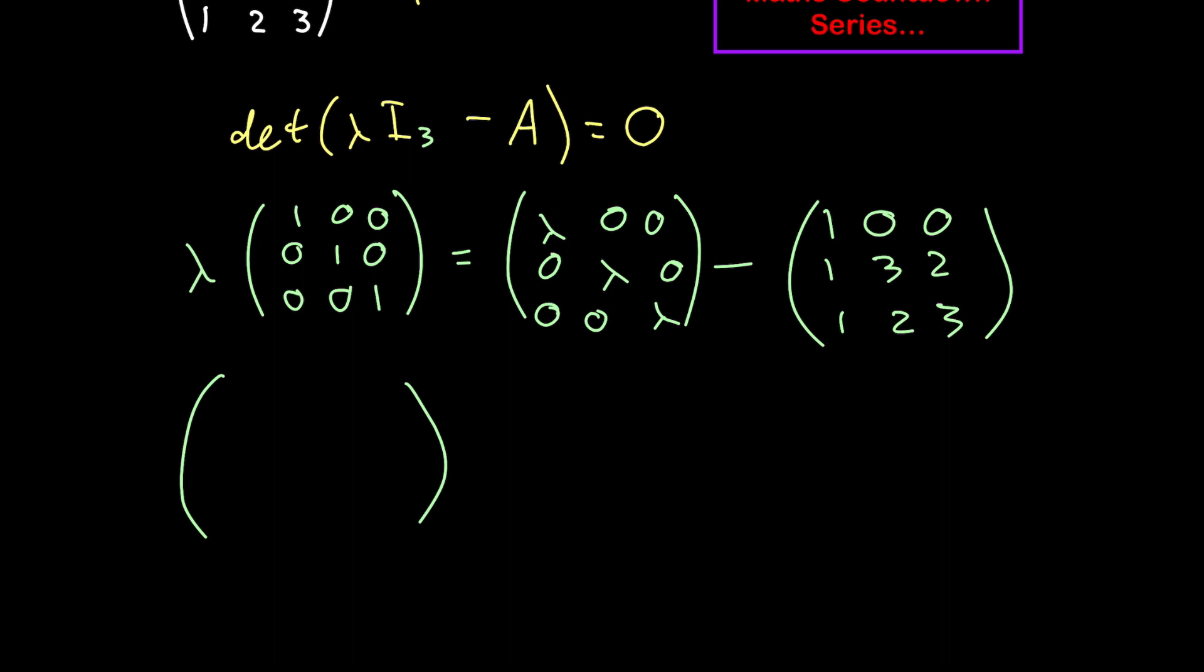We have lambda minus 1. Here we'll have 0 minus 0, then 0 there. Here'll be 0 minus 1, minus 1. Then we have lambda minus 3. Here we have 0 minus 2. Here 0 minus 1, 0 minus 2, and lambda minus 3. We need the determinant of this matrix to be equal to 0.